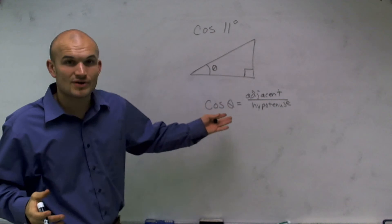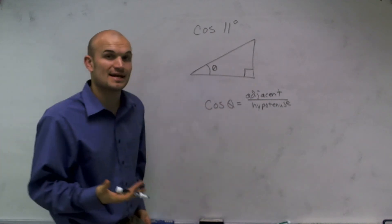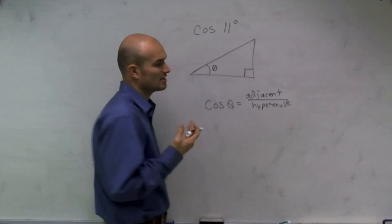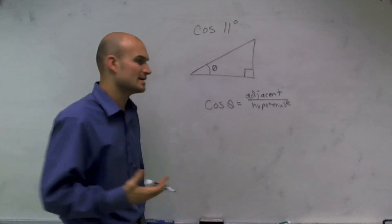Now, looking on this triangle, we're not really given anything, but we do need to understand at least where those two parts are to help us understand where we're getting the cosine function.